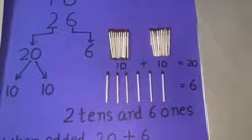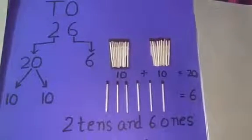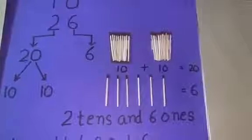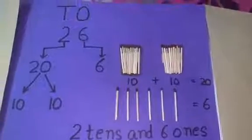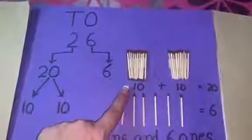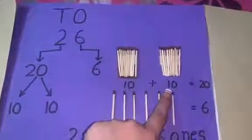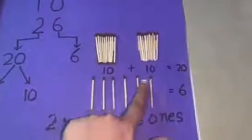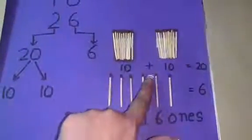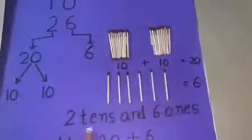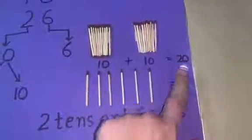Let us understand with the help of examples. In numeral 26, there are 2 tens and 6 ones. Let us have a look here. There is a set of 10 matchsticks and another set of 10 matchsticks. Which means, 2 sets of 10 matchsticks gives me 20 matchsticks. 2 tens gives me 20 matchsticks.